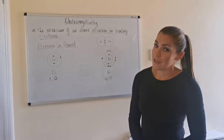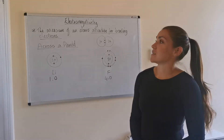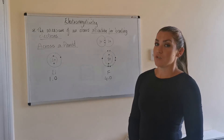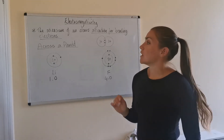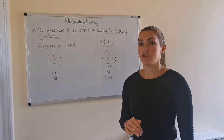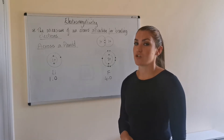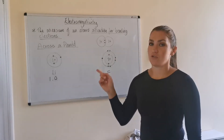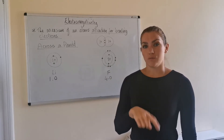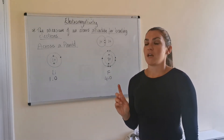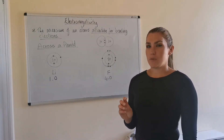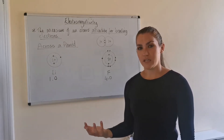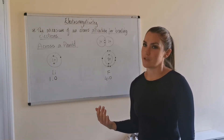Again, like ionization energy, there is a standard definition for electronegativity that you need to learn. Electronegativity is the measure of an atom's attraction for bonding electrons, and it's the bonding electrons that are important. When we've been looking at covalent radius and ionization energy, we've really been talking about the atom's attraction for its own electrons, specifically the outer ones.